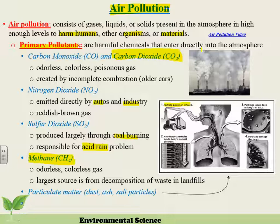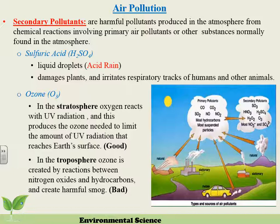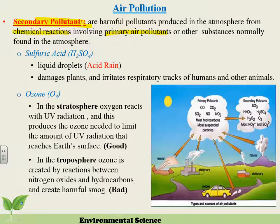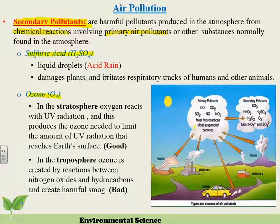When primary pollutants react chemically in the atmosphere, they become secondary pollutants — harmful pollutants produced in the atmosphere from a chemical reaction involving primary air pollutants. Make sure you understand that primary pollutants only become secondary pollutants when they undergo a chemical reaction. These oxides are released and react in the atmosphere; we'll get into more detail later.